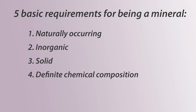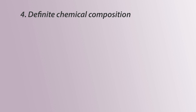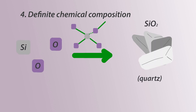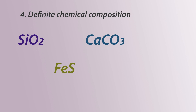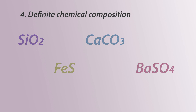Fourth, minerals have to have a definite chemical composition. If minerals are the building blocks of rocks, elements are the building blocks of minerals. A definite chemical composition means each differently classified mineral is made of particular elements in particular proportions that are always the same for that mineral — essentially, different minerals have different chemical formulas, like molecules.